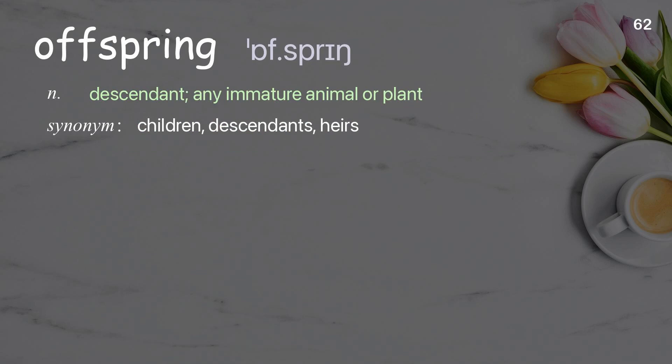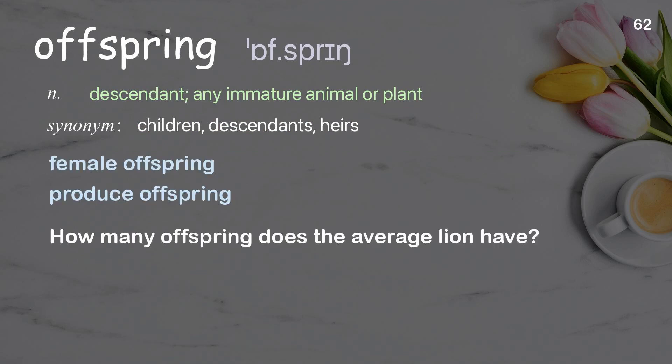Offspring: descendant; any immature animal or plant. Examples: female offspring, produce offspring. How many offspring does the average lion have?